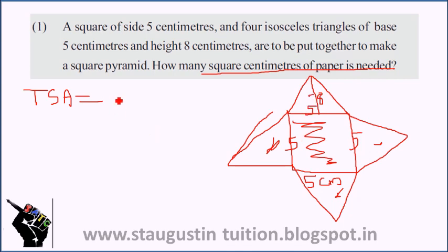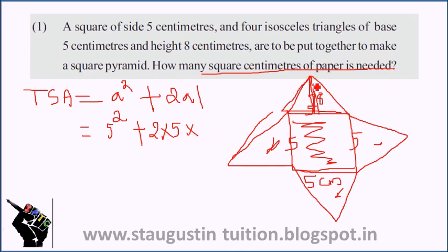Now we can attach it to the base. So we can attach it to the total surface area: TSA equals a squared plus 2 into a into l. What is l? l is the height, this is l. So l is given, l is given as 8.